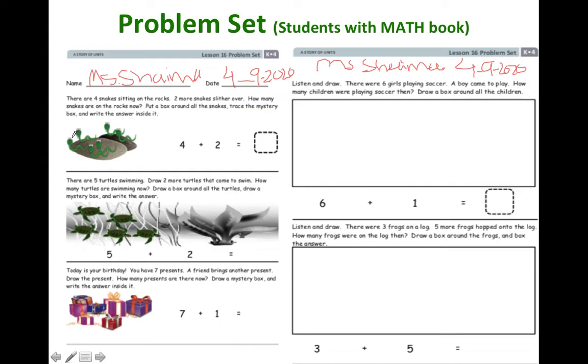So it said, there are four snakes sitting on the rock. Two more slithers over, which means two more came. How many snakes are in the rocks now? Put a box around all around the snake and trace the mystery box and write an answer. So what is it? The question is asking you to find how many snakes are all together. So the direction says to put a box around the snakes. So I have one, two, three, four. I have four. So I'm going to try to put a box around the four first to match this four. And then two more join them. So I'm going to put a small box around the other two.